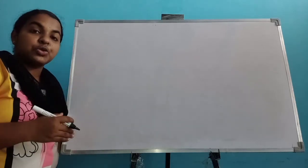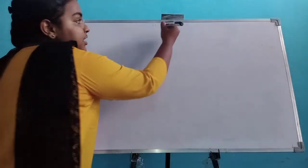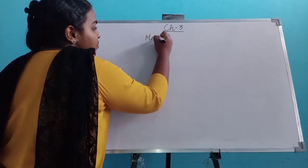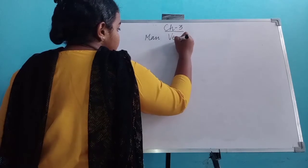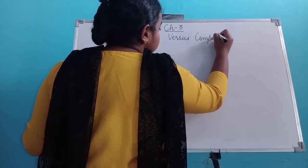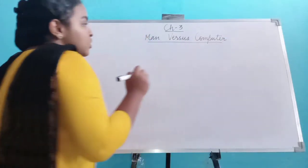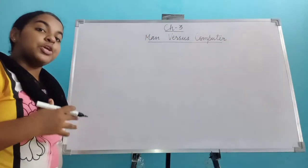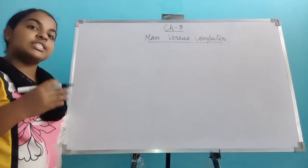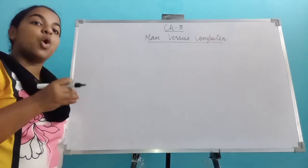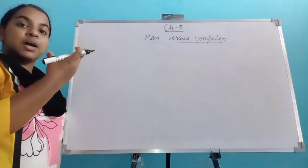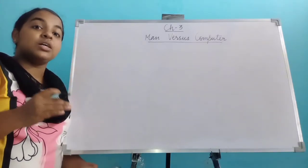Today we are going to start a new chapter, that is chapter 3: Man versus Computer. We are going to see the difference between a man and a computer. In page number 21 we can see an argument between a boy and a girl about man and a computer. So take page number 21.